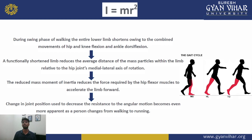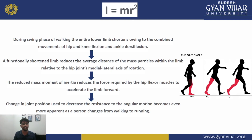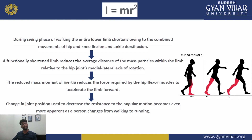By reducing the radius of gyration, we also reduce the mass moment of inertia. When the center of mass was in the extended position it was more distal to the axis, but now it is closer to the axis. With reduced moment of inertia, lesser energy is required to move the limb forward — meaning the hip flexors, specifically the iliopsoas muscle, have to exert less force to propel the limb forward during the swing phase.